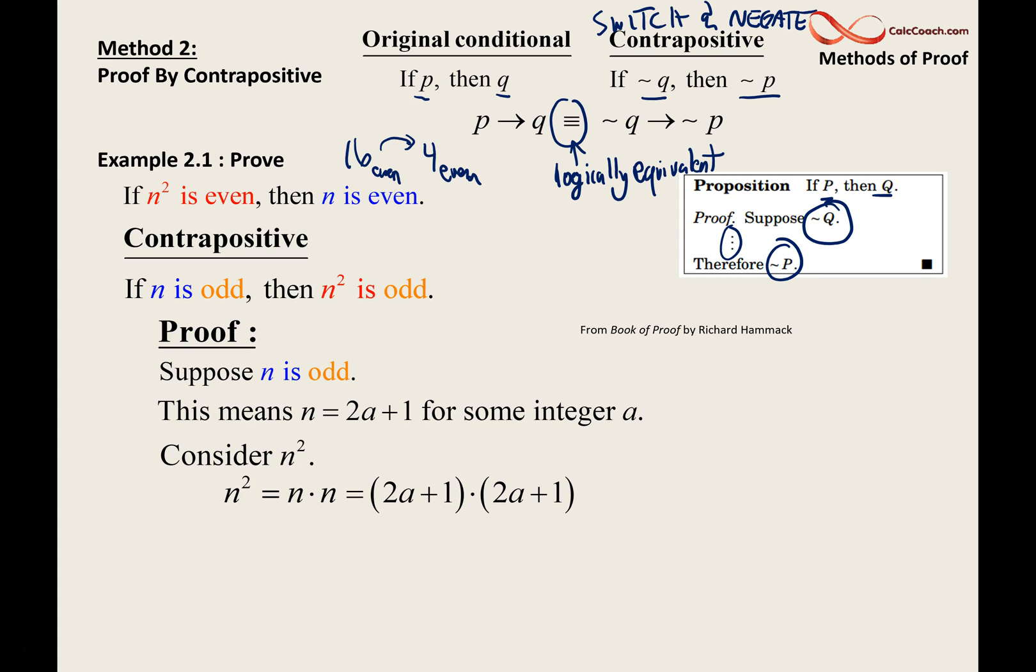Now to do this, you're going to require FOIL. It's a little bit of algebra. We have a binomial times a binomial. We multiply the first, the outer, the inner, and the last. It spells out the word FOIL. So 2a times 2a is 4a squared. 2a times 1 is 2a. 2a times 1 is 2a. They combine to give you 4a. And then 1 times 1 is 1. So n squared, when n is odd, will be equal to this formula: 4a squared plus 4a plus 1 for some integer a.